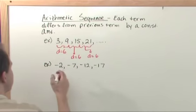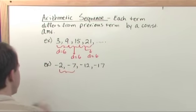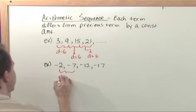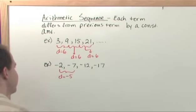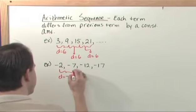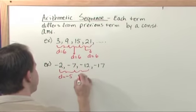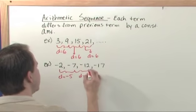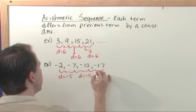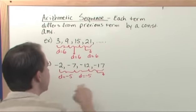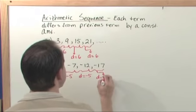What is the difference between negative 2 and negative 7? I think you can convince yourself that d would be negative 5. That's the difference between the two. What is the difference between negative 7 and negative 12? Again, the difference between those two is negative 5. What is the difference between negative 12 and negative 17? d is equal to negative 5.